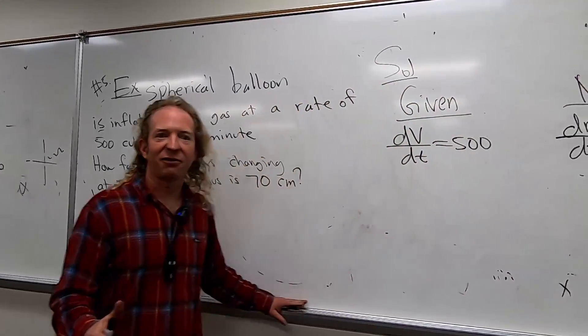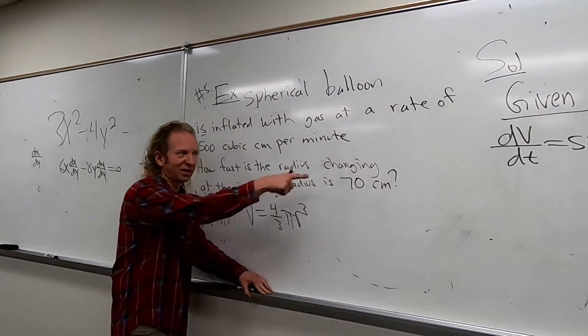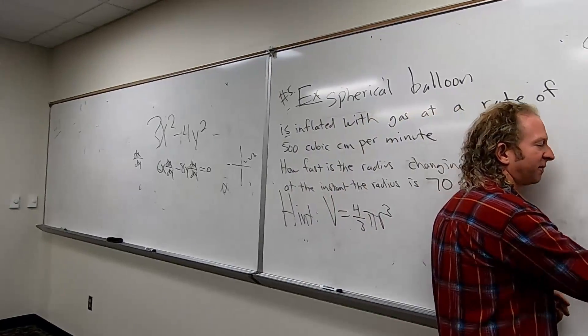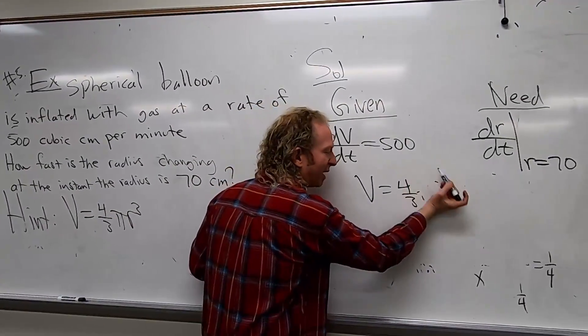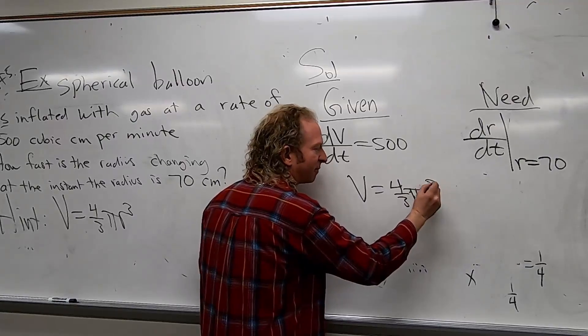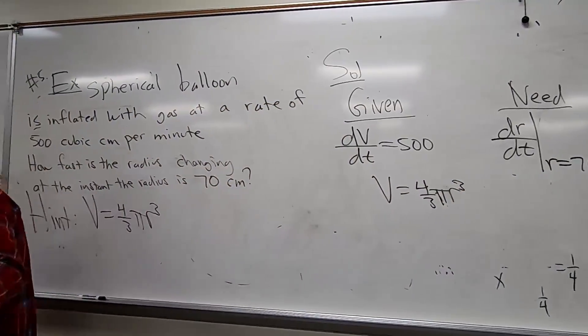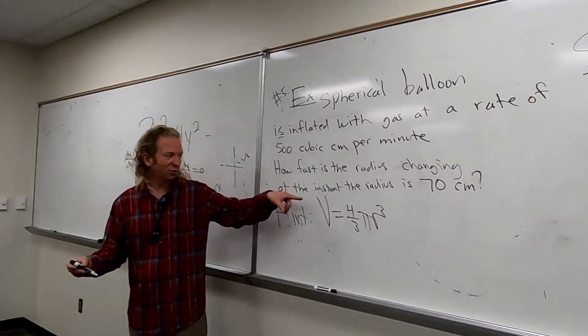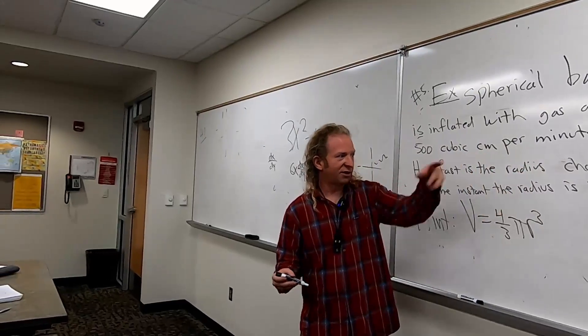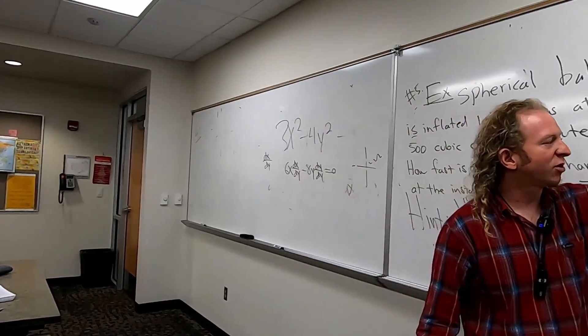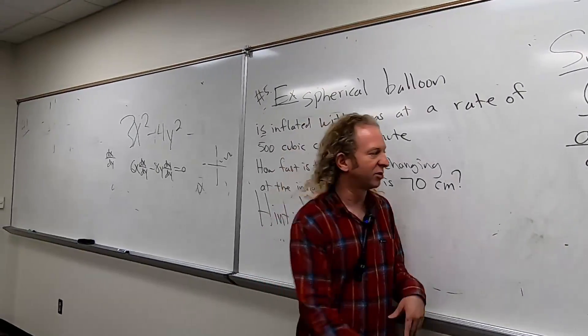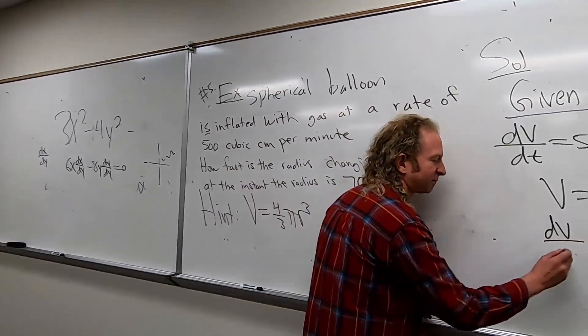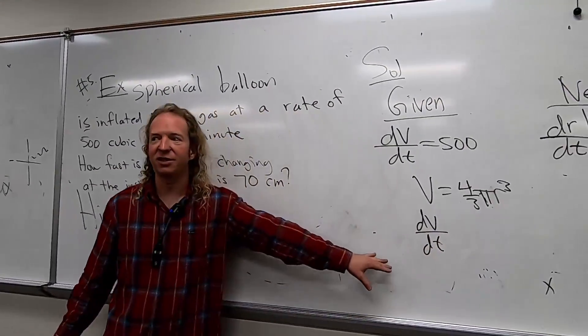Now it's easy. Now all we have to do is differentiate this. So I'm going to write it down again over here. So V is 4/3 pi r cubed. So we're going to take the derivative of this with respect to t, right? Because we're looking for dr/dt. So taking the derivative on the left-hand side will give us just dV/dt. So this will be dV/dt over here.